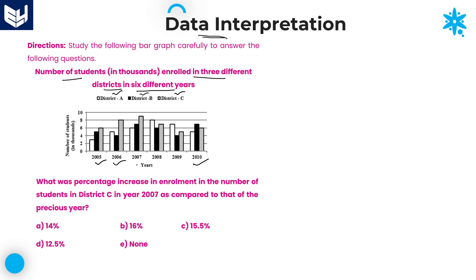The years covered are 2005, 2006, 2007, 2008, 2009, and 2010 — a total of 6 years. One more important piece of information: all the values given in this bar graph are in terms of thousands.